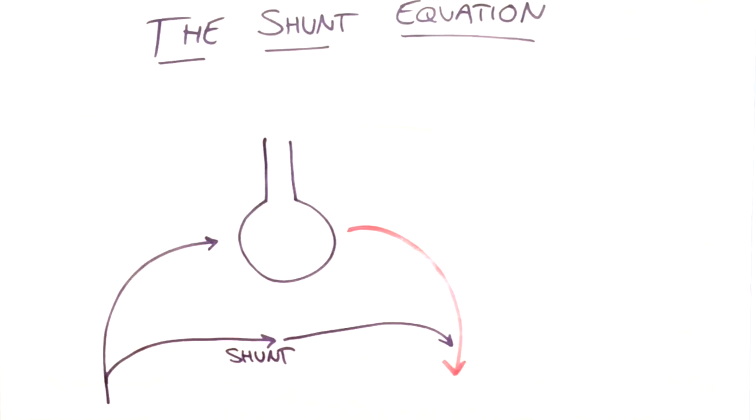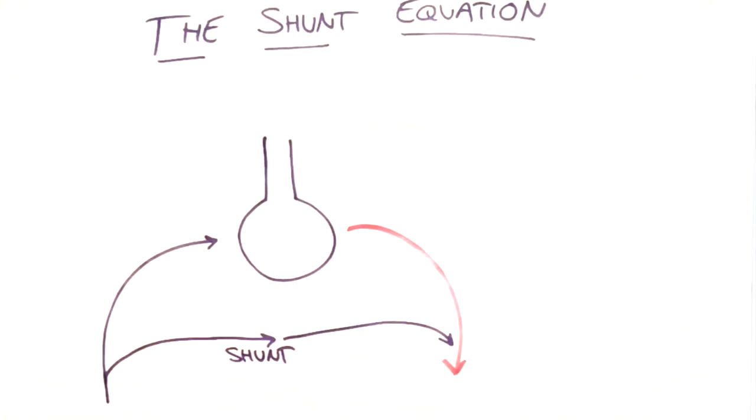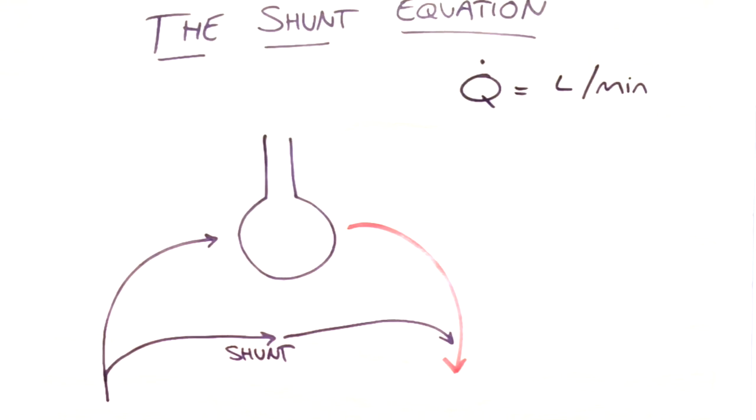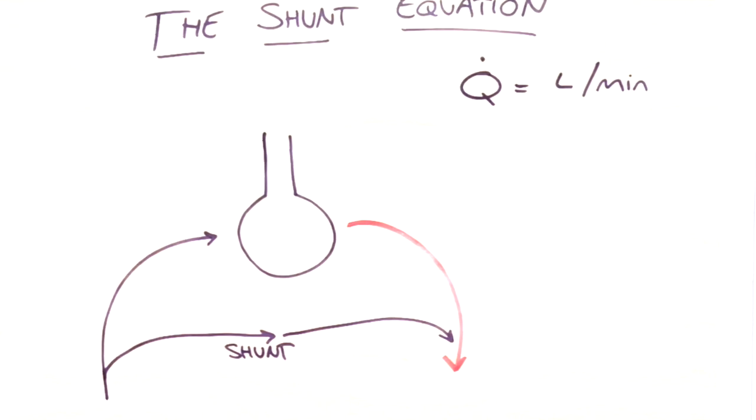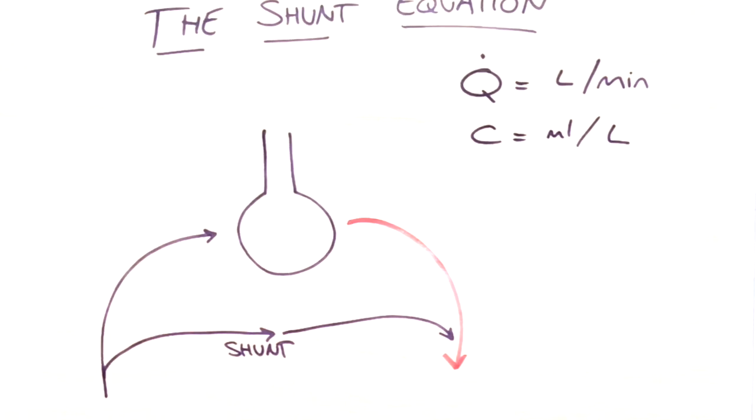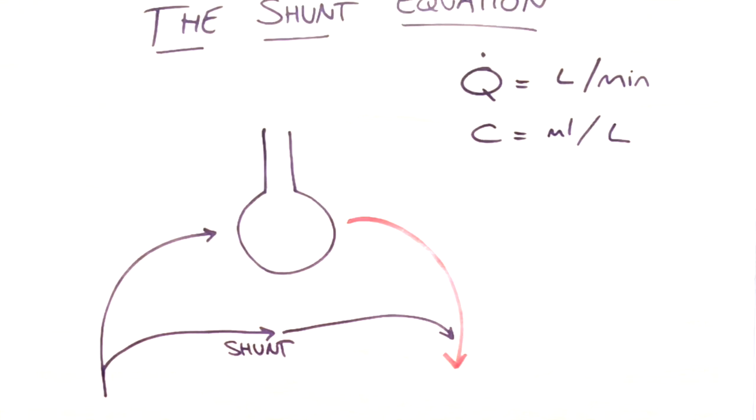Now anesthetists love to make equations out of things like this, so let's look at some terms. To begin with, we're going to look at Q or flow. This is the number of liters of blood per minute that are being pumped by the heart. Now each of those liters of blood can carry a content of oxygen, which is C. And if we multiply those two terms together, we get oxygen flux, which is milliliters of oxygen moving through the body per minute.